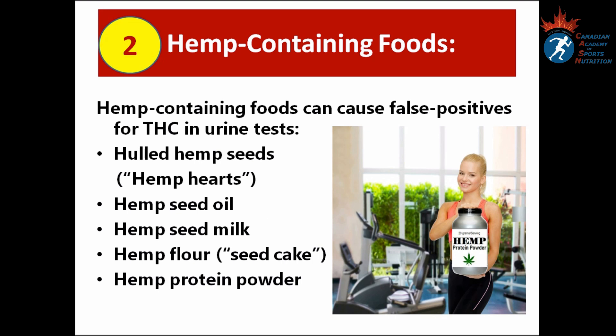Number two, hemp-containing foods. Hemp-containing foods can cause false positives for THC in urine tests. Some of those foods include hulled hemp seed, also known as hemp hearts, hemp seed oil, hemp seed milk, hemp flower, also known as seed cake, and hemp protein powder.